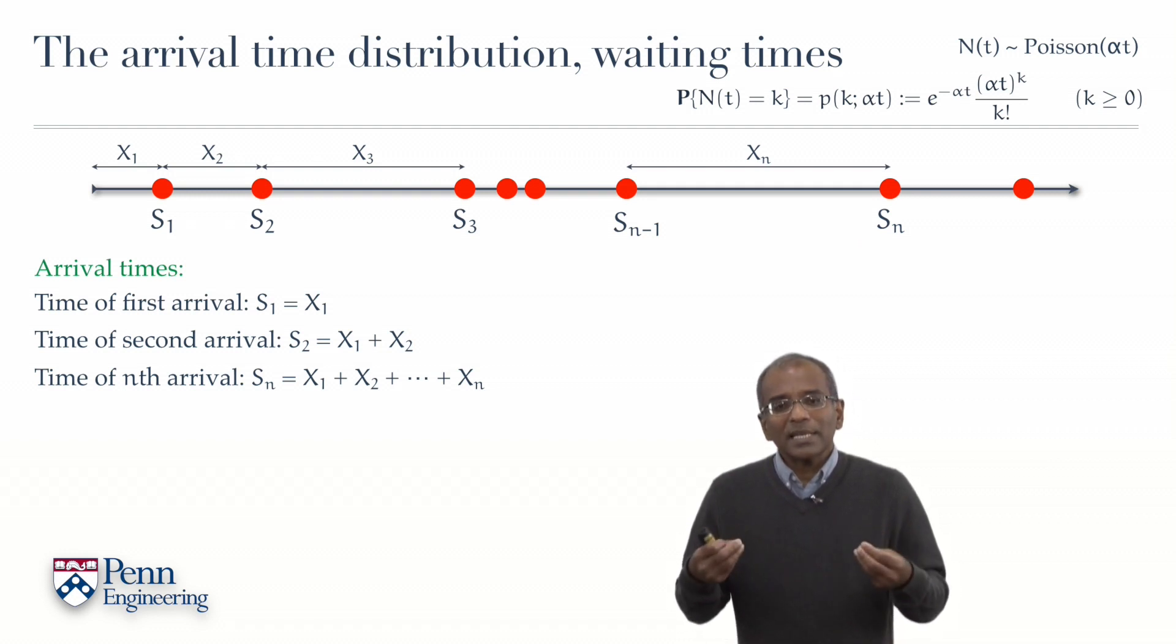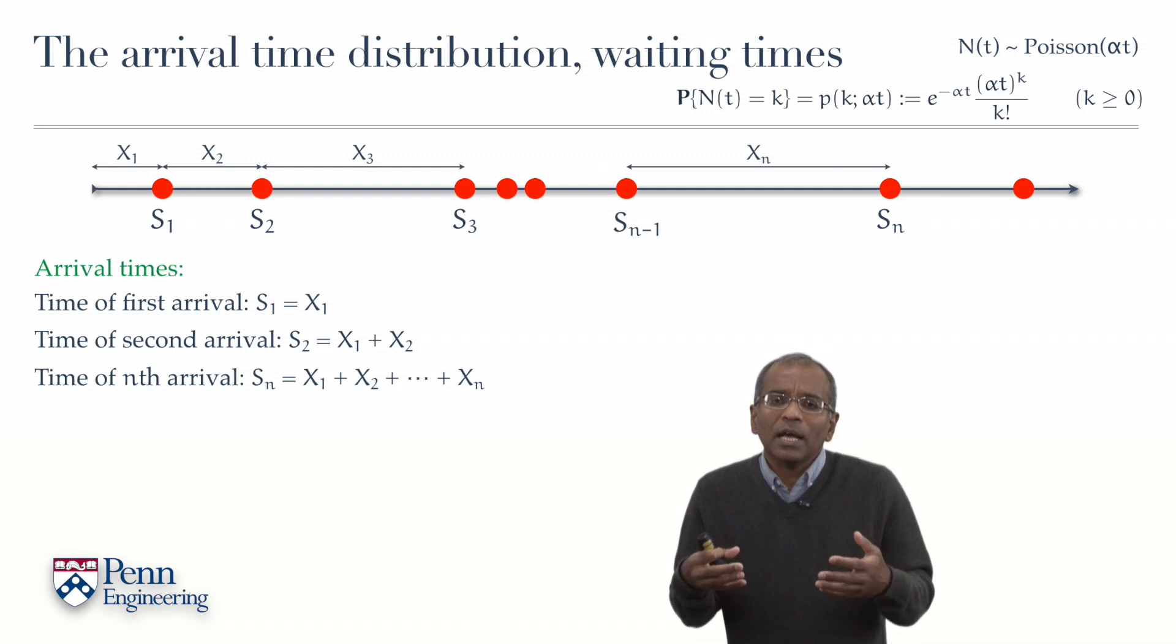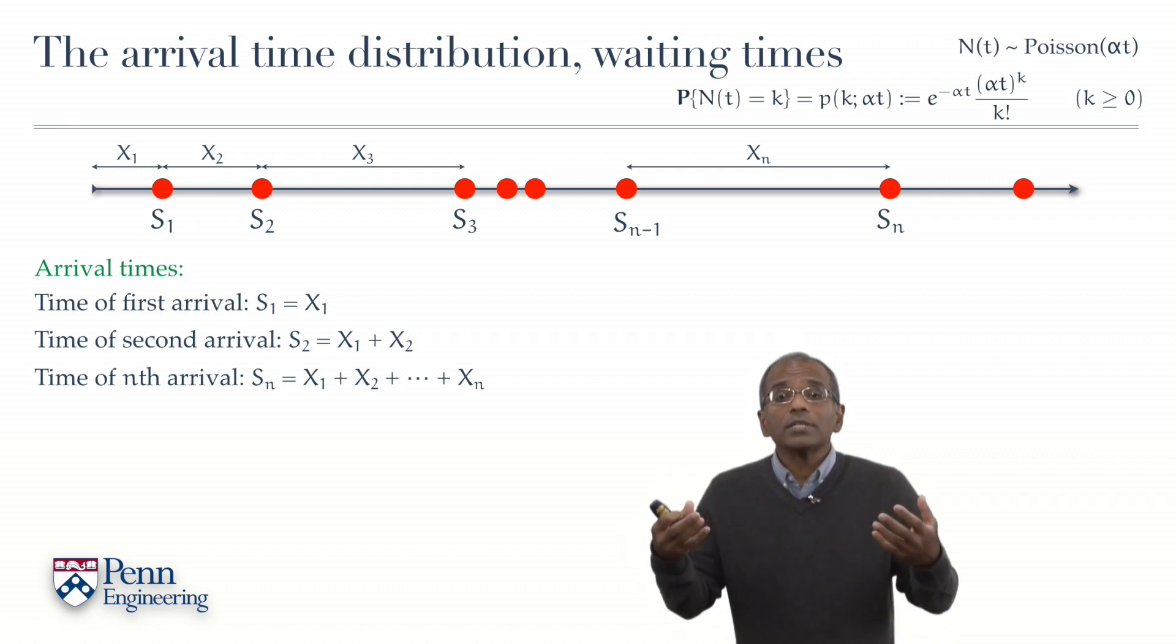In these settings, especially with time going to your right, it is natural to think of Sn as the waiting time till the nth arrival. One can imagine somebody waiting for individuals to show up, impatiently tapping their legs, waiting until all the people show up. So Sn represents a waiting time. Underlying a Poisson process is really a characterization of waiting time distributions.